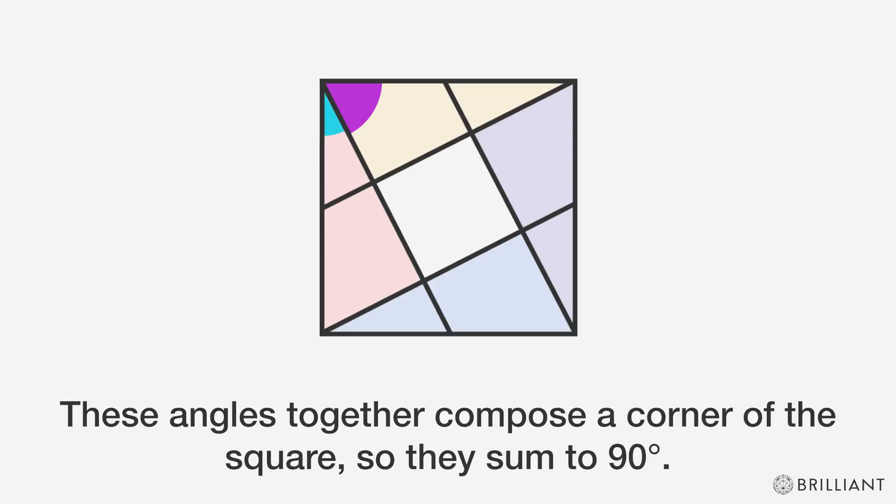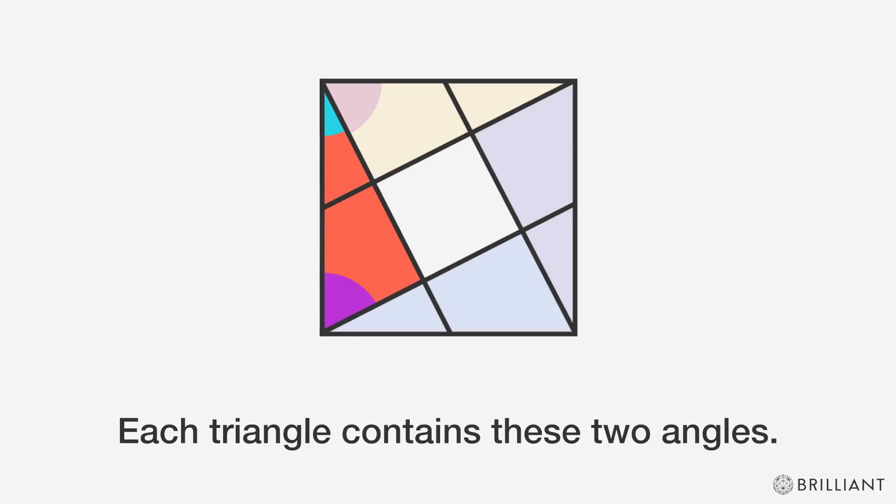These angles together compose a corner of the square, so they sum to 90 degrees. Each triangle contains these two angles.